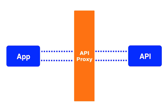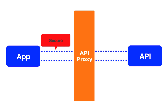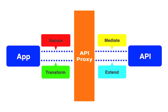There are over 30 out-of-the-box configurable policies that you can attach to various points in this flow. Policies enable you to do things like secure your API, prevent denial-of-service attacks, and transform message content. There are even policies that enable you to extend existing policies using languages like Python, JavaScript, and Java.